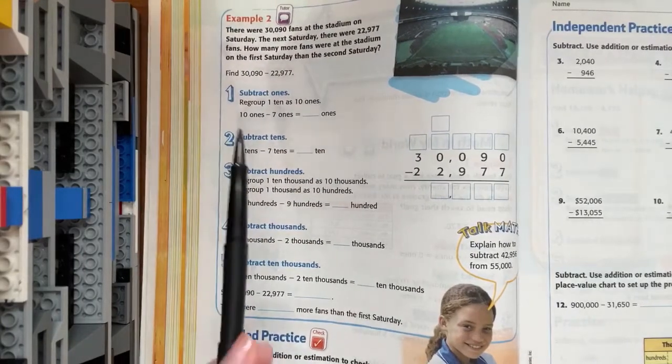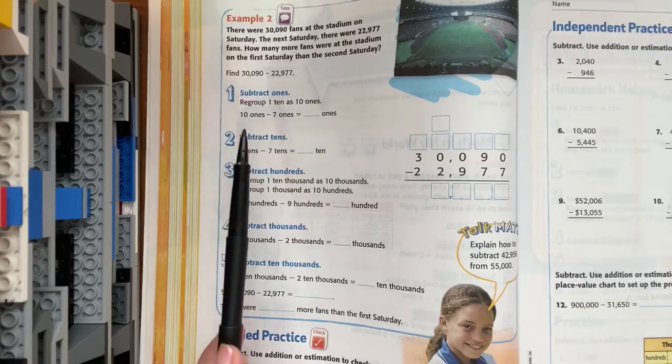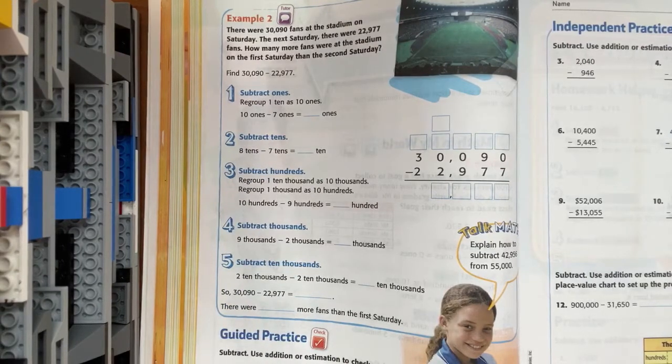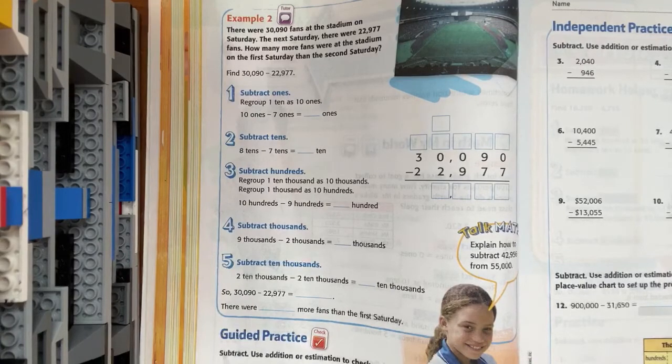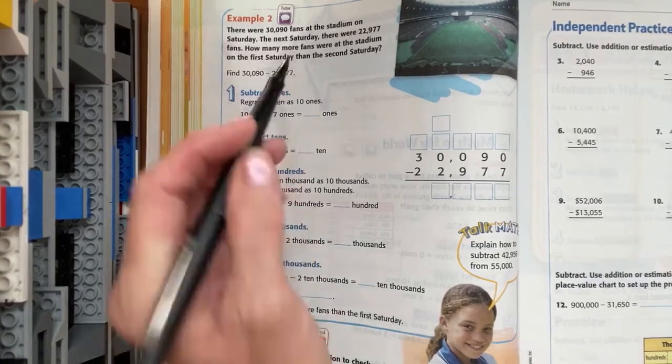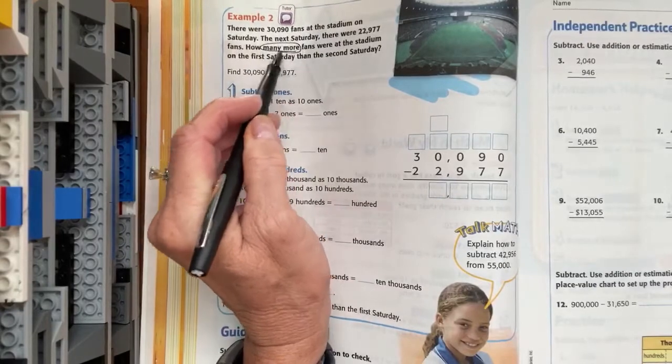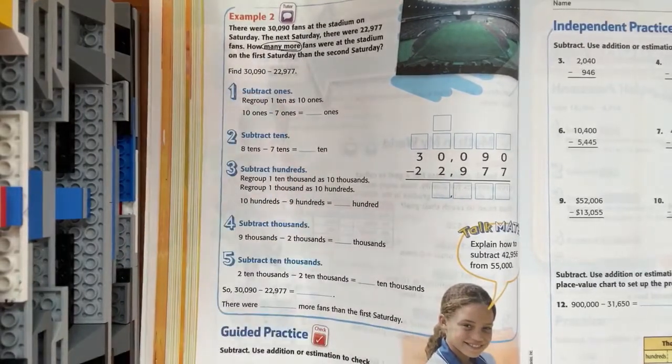And it says there were 3,090 fans at the stadium on Saturday. The next Saturday there were 22,997 fans. How many more fans? How many more? That's going to tell us that we're going to be subtracting.